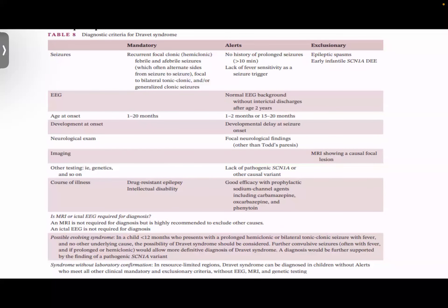Dravet syndrome is another developmental seizure syndrome. There will be recurrent focal clonic seizures that can be febrile or afebrile. Age of onset is usually 1 to 20 months. It is drug-resistant and associated with intellectual disability. MRI is not required for diagnosis but is routinely performed to exclude other processes. Ictal EEG is also not required for diagnosis.